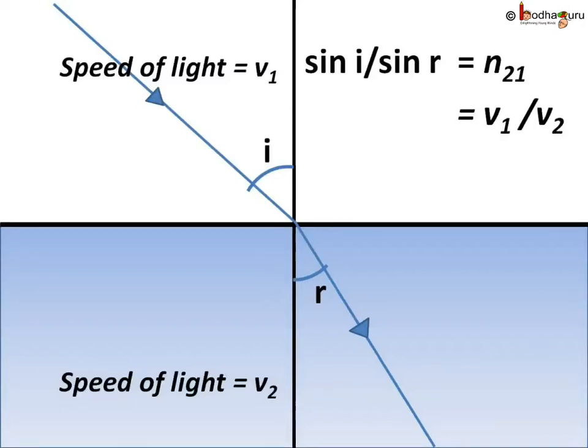Say light was traveling through medium 1 at speed v1, then it enters medium 2 and its speed changes to v2. The refractive index of medium 2 with respect to medium 1 is equal to the speed of light in medium 1 to the speed of light in medium 2. This is usually represented by the symbol n21, that is, refractive index of medium 2 with respect to 1. So n21 equals v1 by v2.